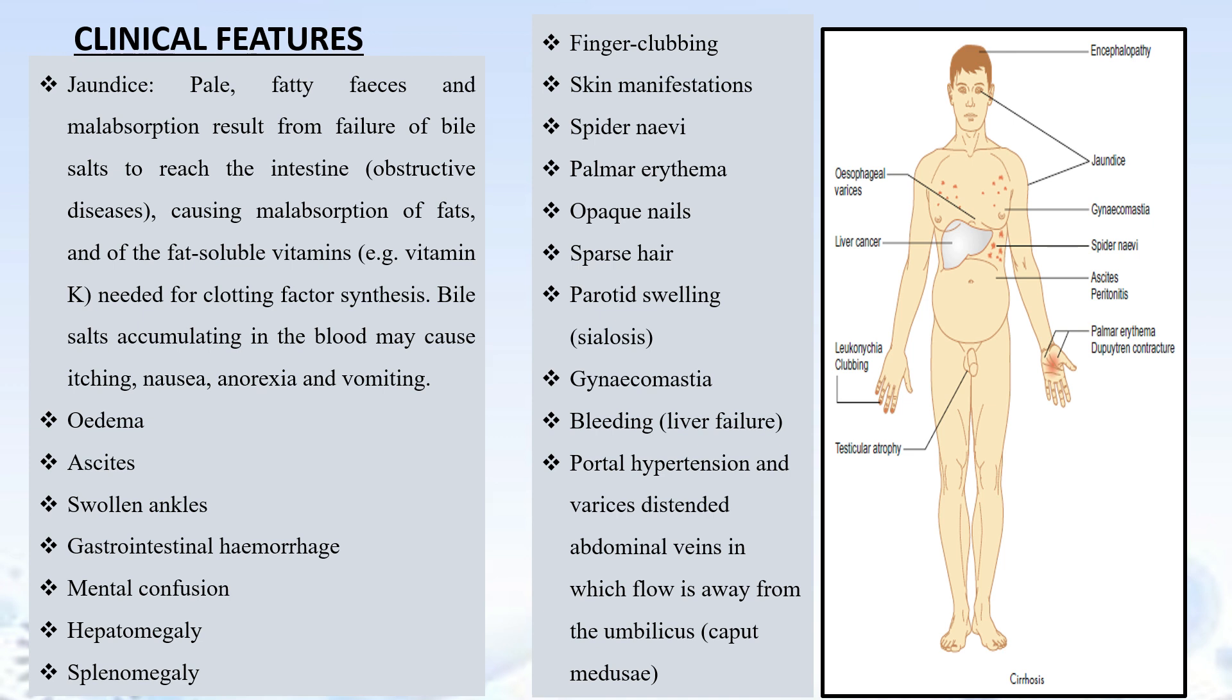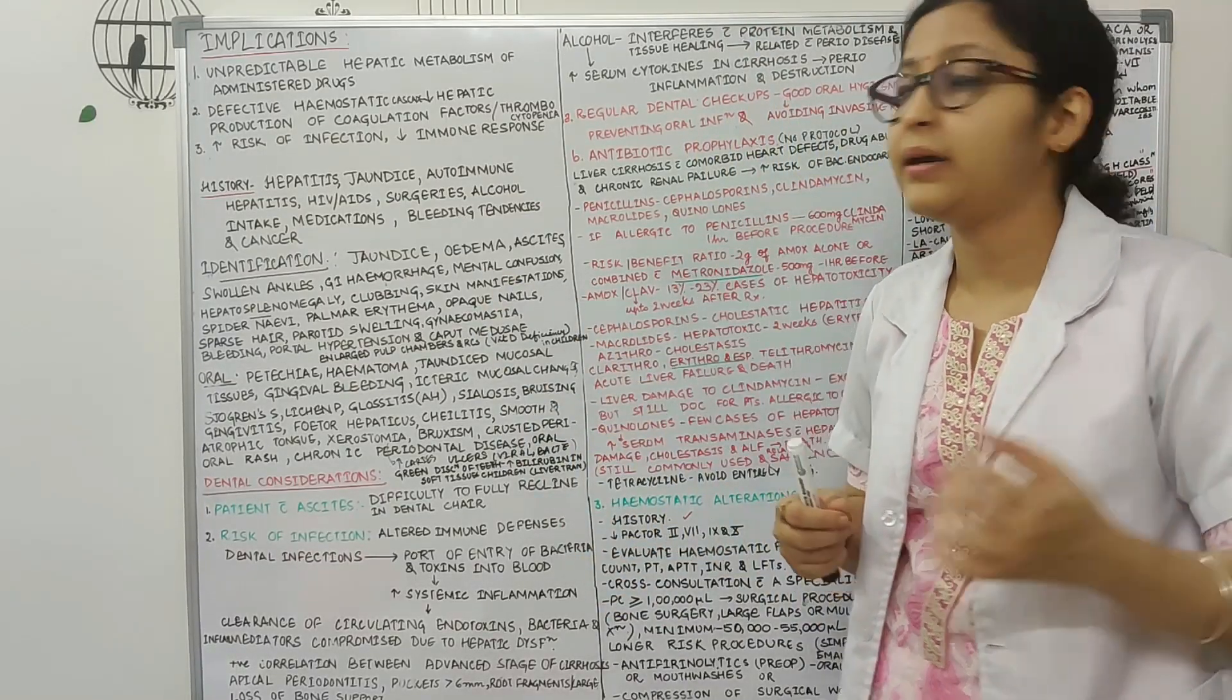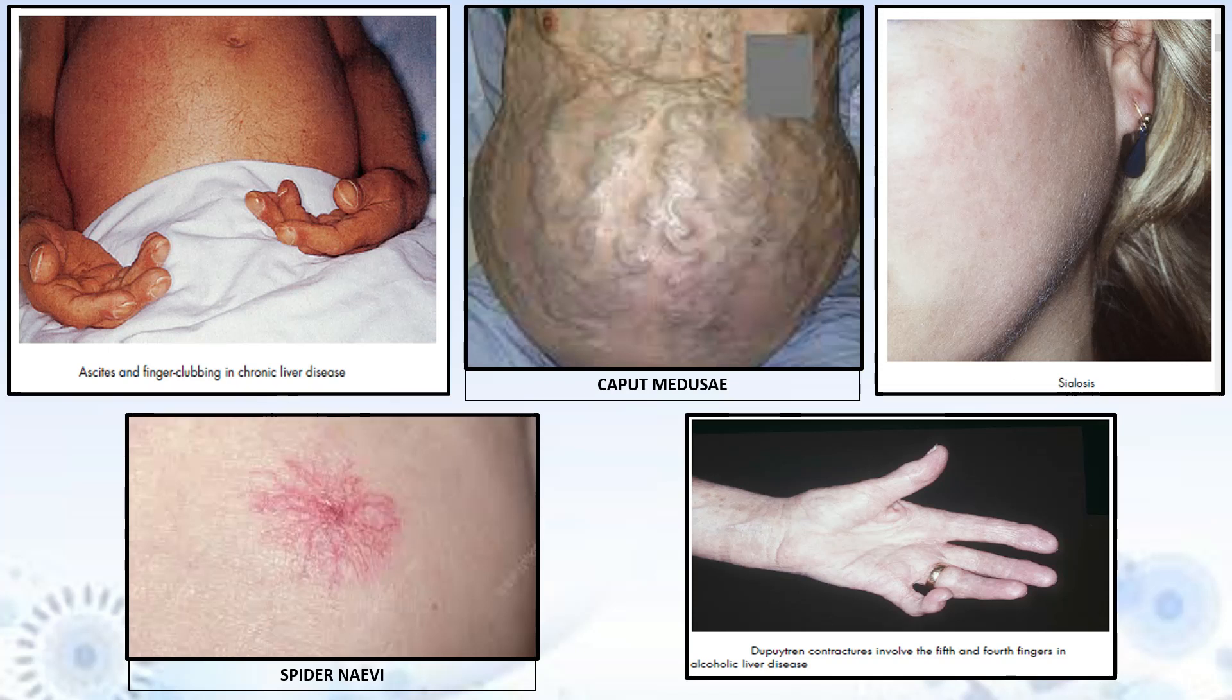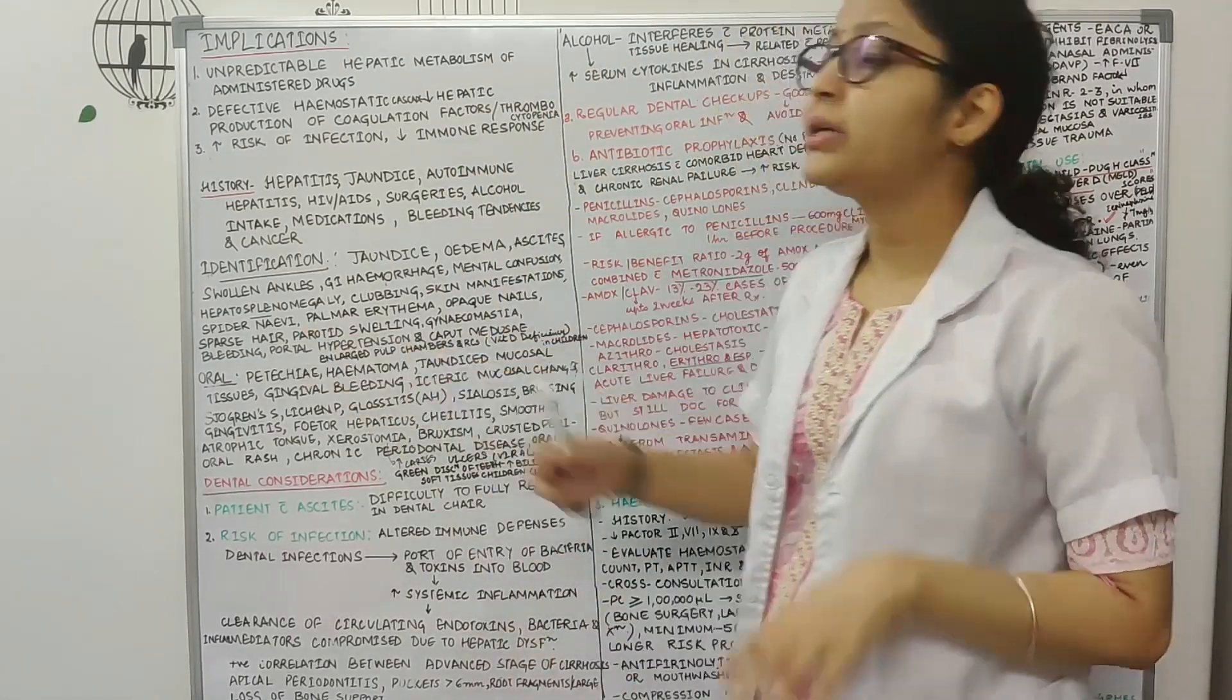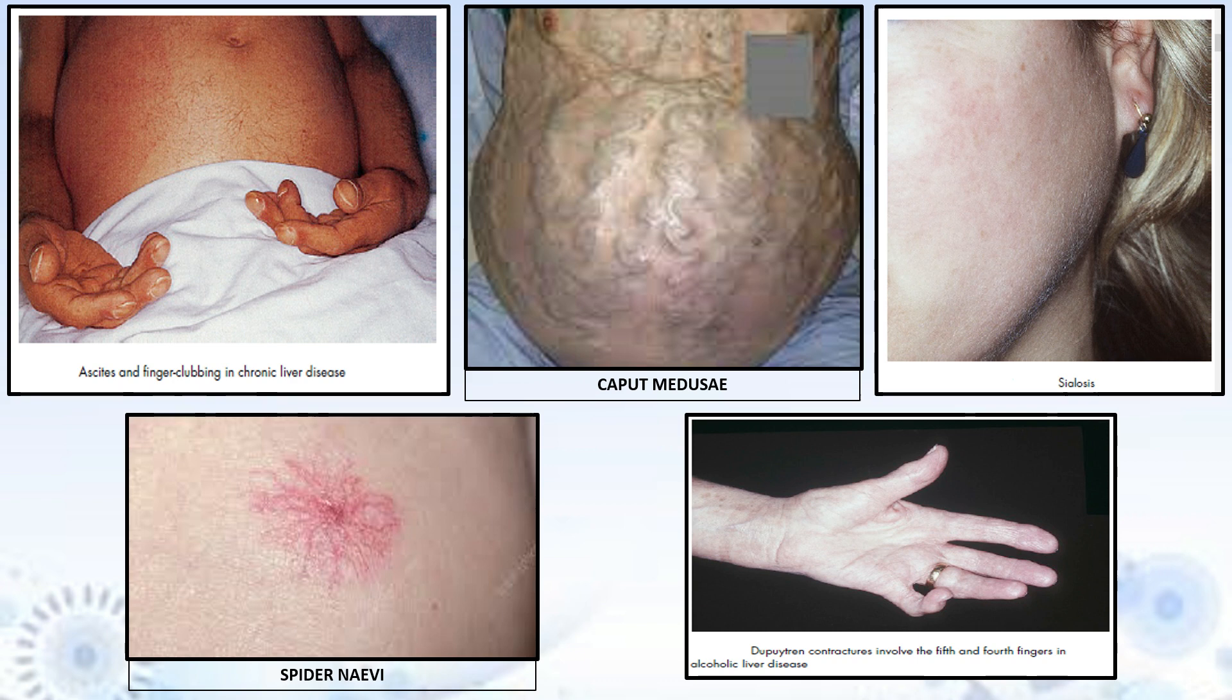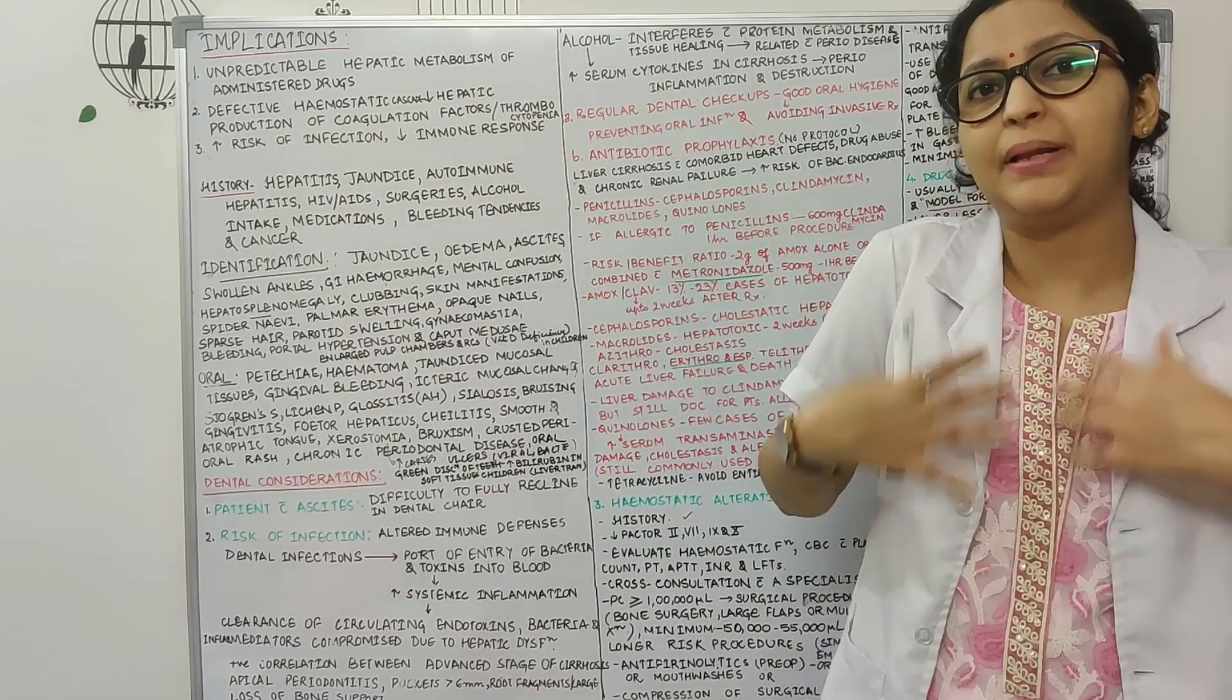Then you can also see hepatosplenomegaly. Then clubbing of fingers can be seen. You can see opaque nails. You can see leukonychia. Palmar erythema. You can see redness in the palms. Then you can see parotid swelling that is sialosis. You can see in the patient, this is not because of liver disease as such but parotid swelling sialosis basically seen due to the alcohol intake in such patients. Then you can see caput medusae. You can see spider nevi.